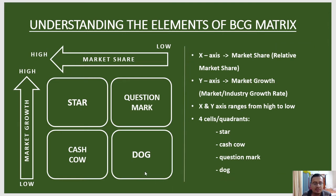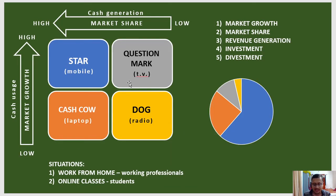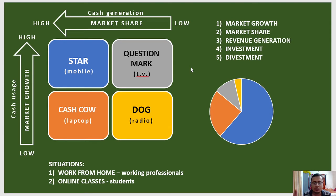Now the actual BCG matrix explanation uses two situations created in the context of the COVID-19 pandemic: work from home for working professionals, and online classes for students. We need to think about five topics: market growth, market share, revenue generation, investment, and divestment — in order to analyze the product lines of our example company XYZ.